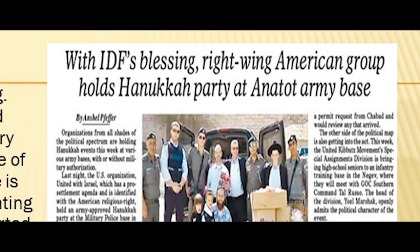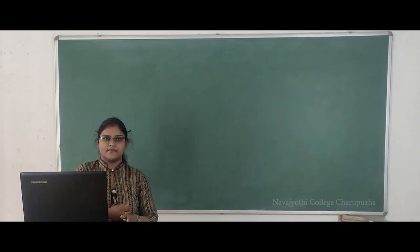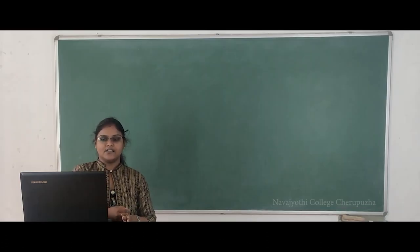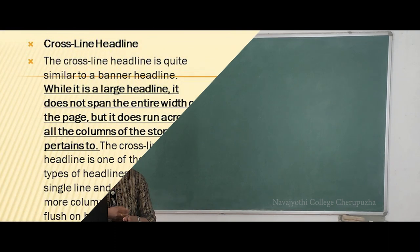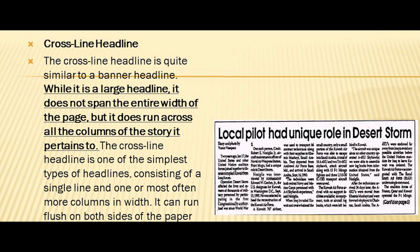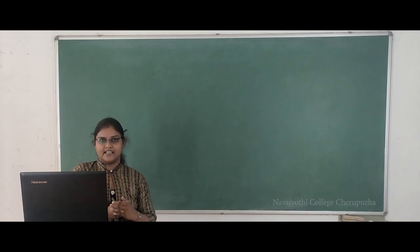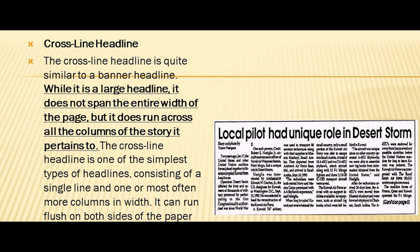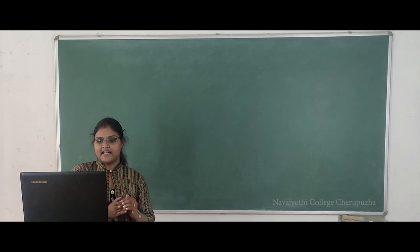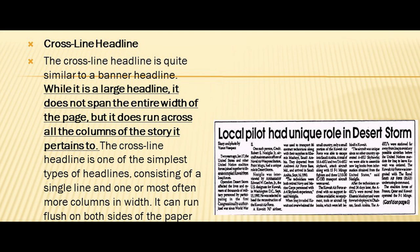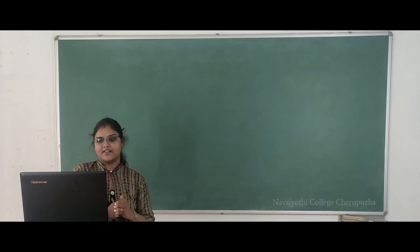The next headline is the cross line headline. The cross line headline is very similar to the banner headline, but the difference is that it does not cover all the columns of the newspaper — only the space provided for the particular news story. While it is a large headline, it does not span the entire width of the page, but it does run across all the columns of the story it pertains to. Here is an example of a cross line headline.